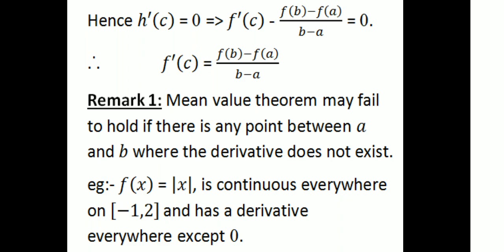Thus the Mean Value Theorem is proved. For a function continuous on closed interval [a, b] and differentiable on open interval (a, b), we have f'(c) = [f(b) − f(a)] / (b − a). One remark: the Mean Value Theorem may fail to hold if there is any point between a and b where the derivative does not exist.